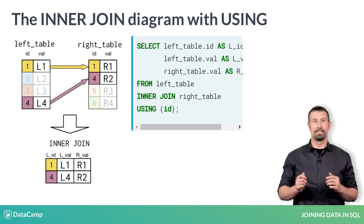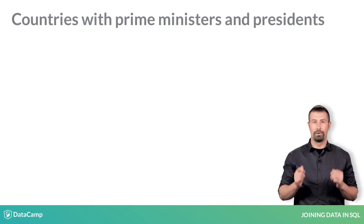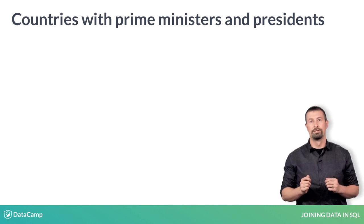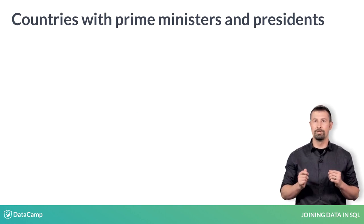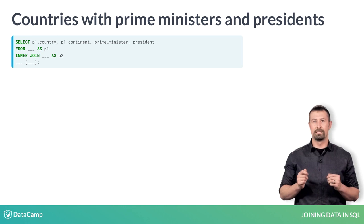Let's revisit the example of joining the prime ministers table to the presidents table to determine countries with both types of leaders. How could you fill in the blanks to get the result with USING?